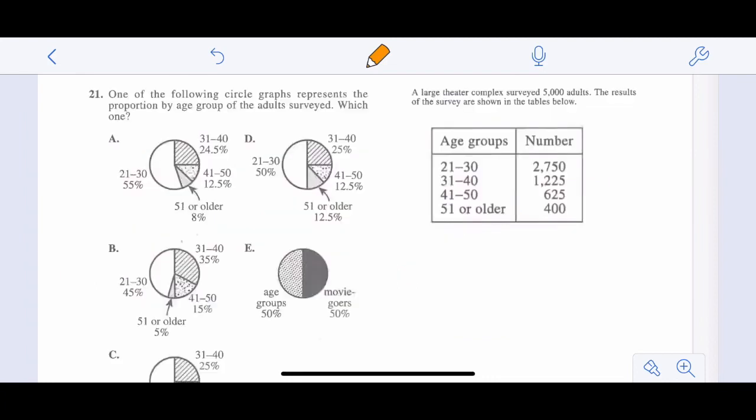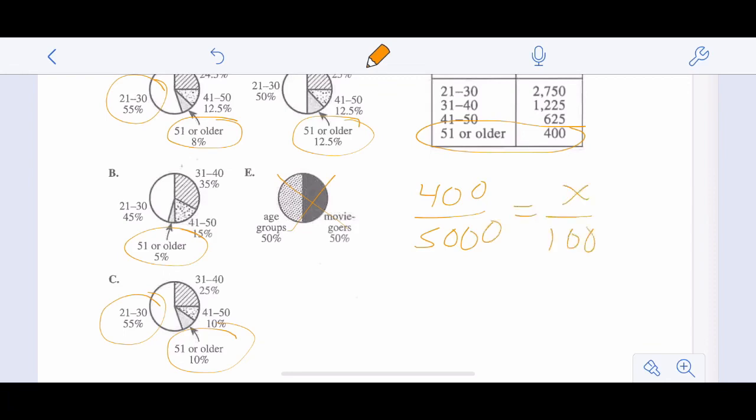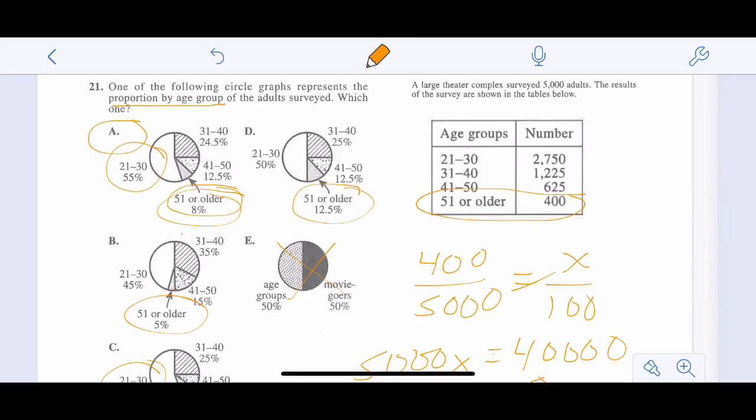One of the following circle graphs represents the proportions by age group of adults surveyed. So when I glance at the percentages, I'm going to look for ones that are different. I see choice A has 55%, also the same in choice C. But when I look at the 51 or older group, they're all different. So that's what I'm going to use. I'm going to look at 51 or older and set up a proportion. 400 out of 5,000 equals what percent over 100. I'm just going to cross multiply. 5,000X equals 40,000 divided by 5. We get X equals 8. So which one is 8? Choice A. So that has to be my answer. I only have to figure out one proportion and we're good to go.